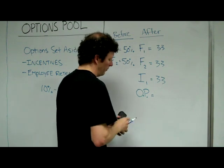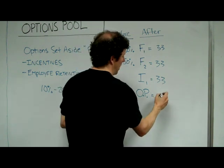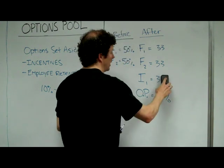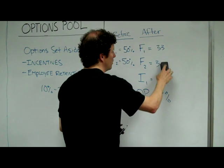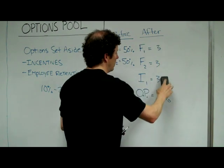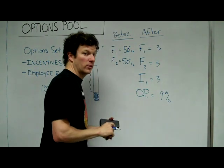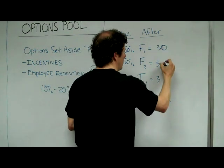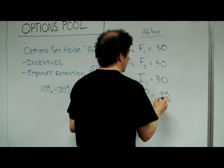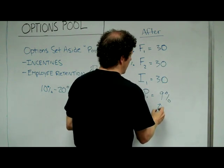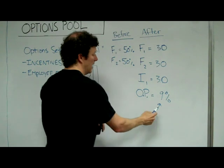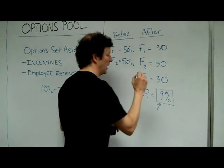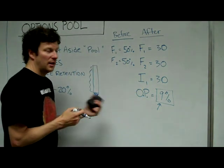Let's say they create an options pool of 9%, because it makes the math easy. If they want a 9% options pool and each of them agrees to equally lose equity — which isn't always the case, as sometimes the investor demands only the founders lose equity — it would be 30% ownership for each party, creating a 9% options pool. Now you can hand out these options any way you'd like going forward. That's the concept of an options pool.